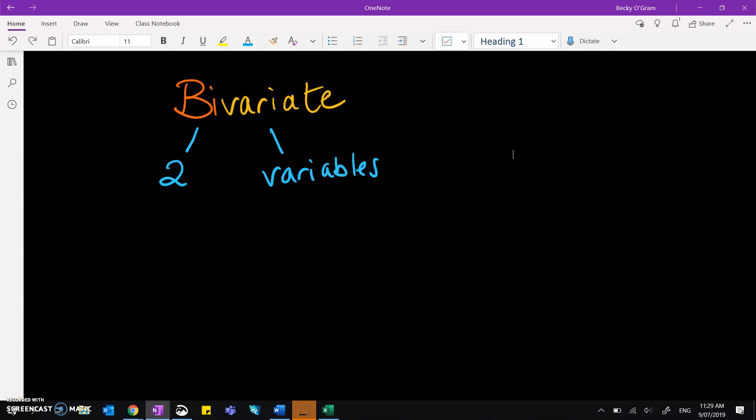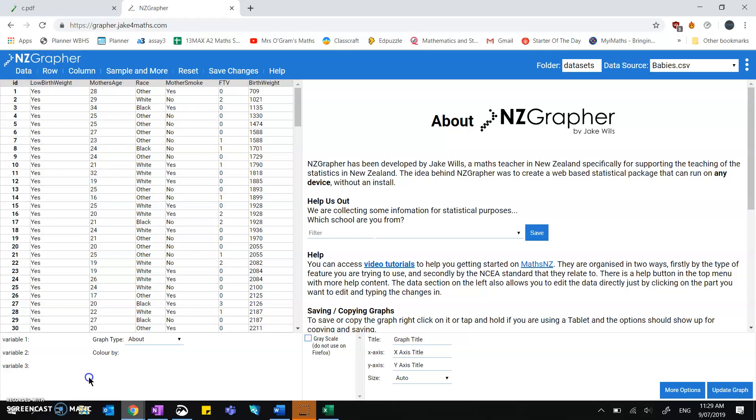Now the data set that I've chosen to use for this video is the diamonds data set, which can be found in NZGrapher. And if you haven't used that program before, just google NZGrapher and you'll find it. I'll show you what it looks like. It's here, NZGrapher.